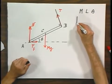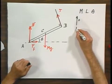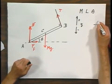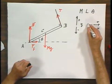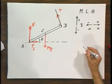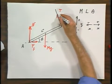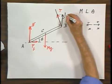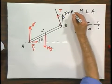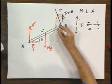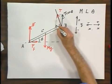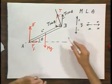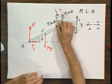Let's call upward the positive y direction and rightward the positive x direction. We decompose the tension into a y-component, T cosine theta, and an x-component, T sine theta. These two components replace the single tension vector.